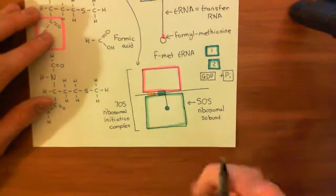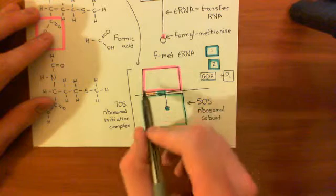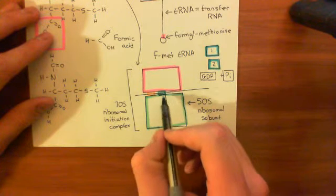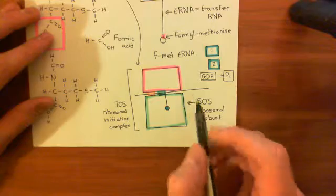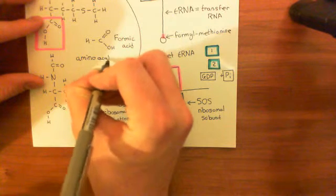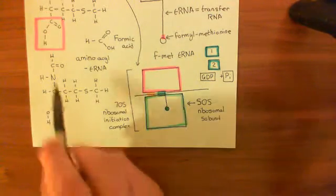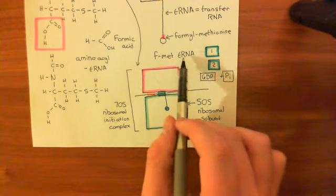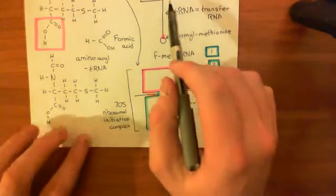Now we need to discuss some important things about this 50S ribosomal subunit. The mRNA runs in between the 30S and the 50S subunits. The aminoacyl tRNA — specifically here a formylmethionine tRNA — more generally, we're going to have aminoacyl tRNAs, which just mean tRNAs with amino acids joined onto them via their carboxylic acid groups. We've looked at a specific example of an aminoacyl tRNA where we have this formylmethionine tRNA.